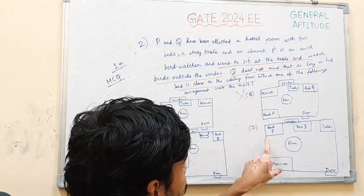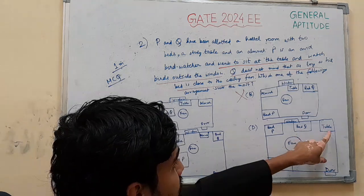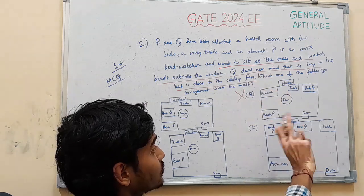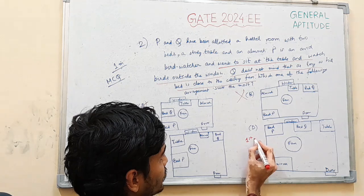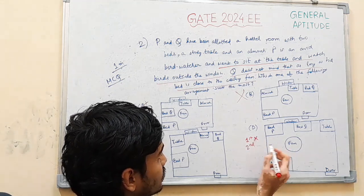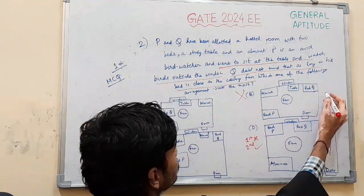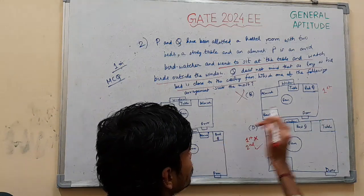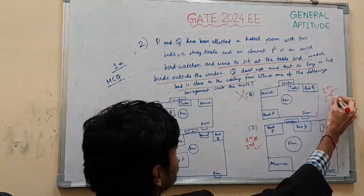And in this option, bed of Q is close to the fan, we can say. But the table is away from the window. So the second condition is satisfied. The first criterion is not satisfied. First not satisfied, second satisfied. Here first is satisfied plus second is not satisfied.